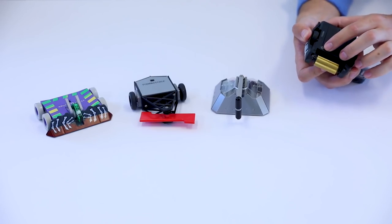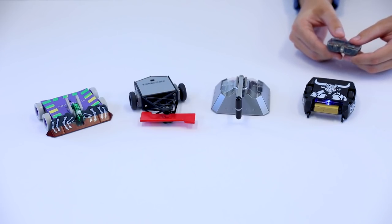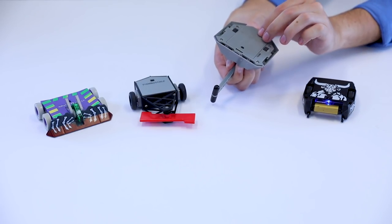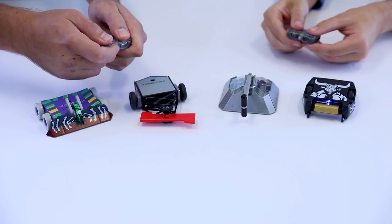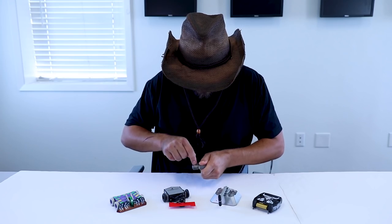Power on the first BattleBot, aim the controller at it, and press any button to pair them together. Repeat this process one controller at a time. That means everyone, except for the person trying to connect to a BattleBot, has to stop pressing buttons on their remotes, including you, Johnny.